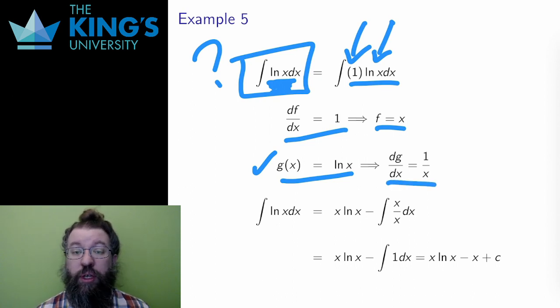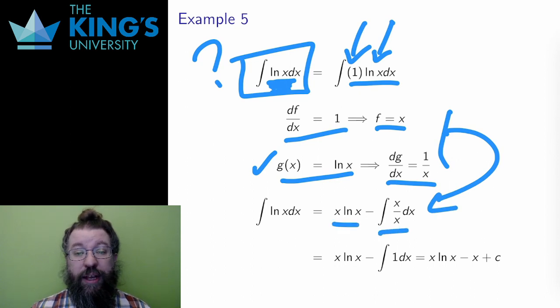Well, now I have all the pieces, and I can write the right side of integration by parts. x times ln x minus the integral of x over x, which is just the integral of one. And the integral of one is just x. So the result is x ln x minus x plus the constant of integration.